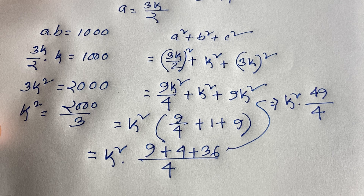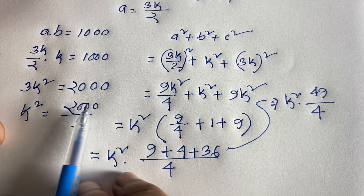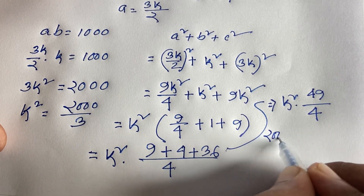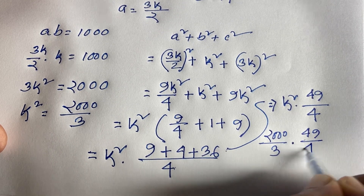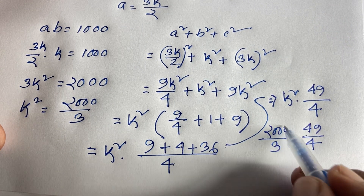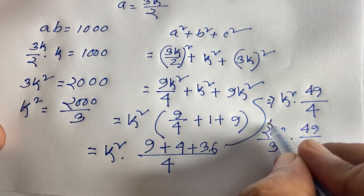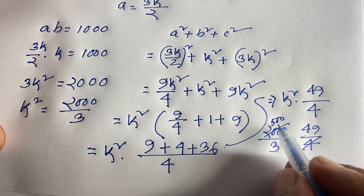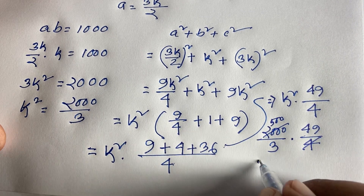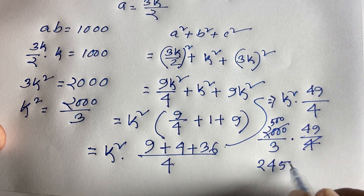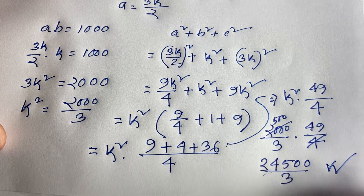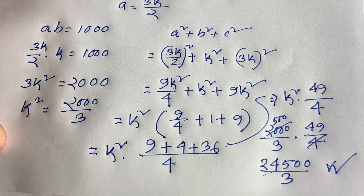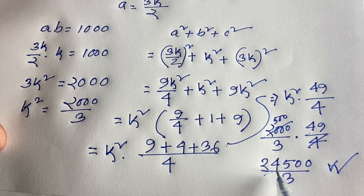Recalling that k² = 2000/3, we get: (2000/3)·(49/4) = (2000·49)/(3·4). Since 2000/4 = 500, this becomes 500·49/3 = 24500/3. Therefore a² + v² + c² = 24500/3.